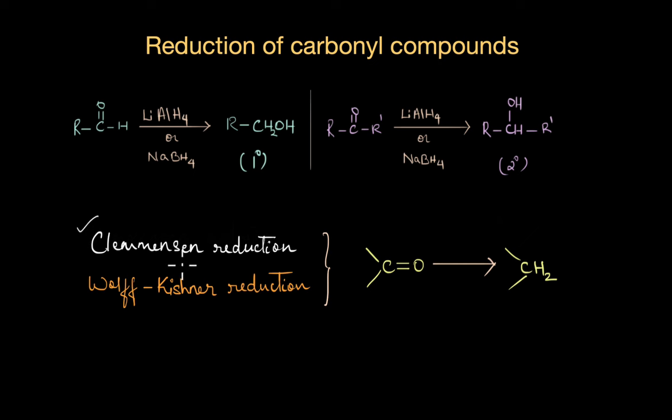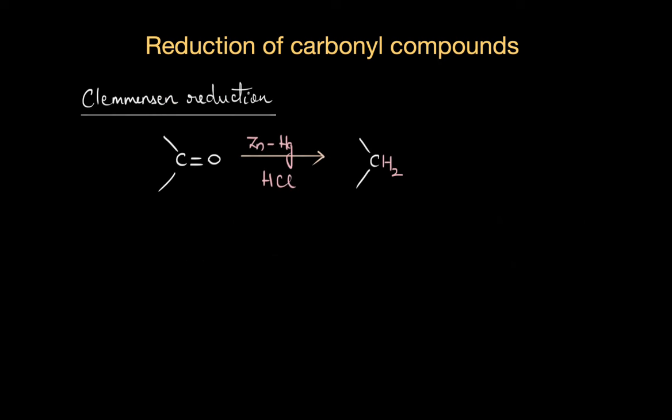Let's begin with Clemensin reduction. Here, the carbonyl compound is heated with an excess of amalgamated zinc, which is basically zinc and mercury complex, in a strongly acidic medium using concentrated HCl. When we use these reagents, the C=O gets reduced to CH2.